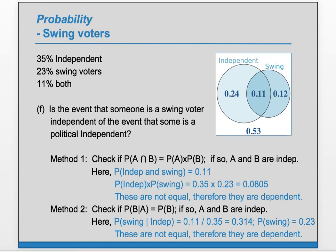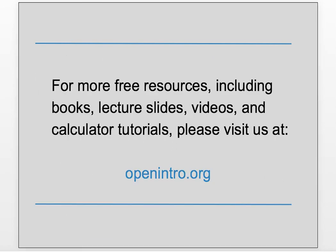You might ask whether these differences in probability are just due to random sampling error. For that question, you'll have to wait until we get to the chi-squared test of independence. That's it for this video — for more free resources, check us out at openintro.org.